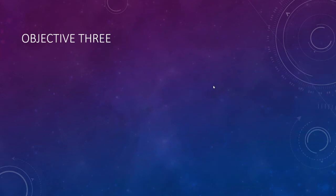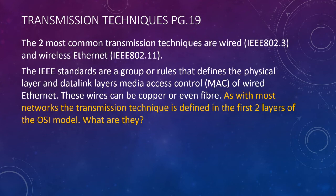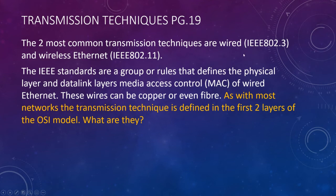Objective three: transmission techniques — how we get data from here to there. The most common ones are wired Ethernet and wireless Ethernet. At a bare minimum, by the end of this ILM you should know the designations for wired Ethernet — IEEE 802.3 — and wireless Ethernet — IEEE 802.11.